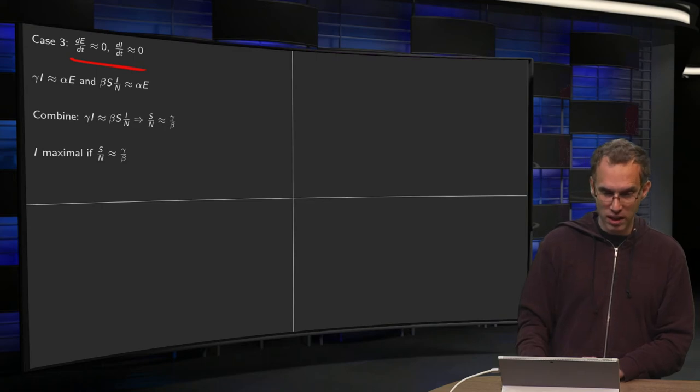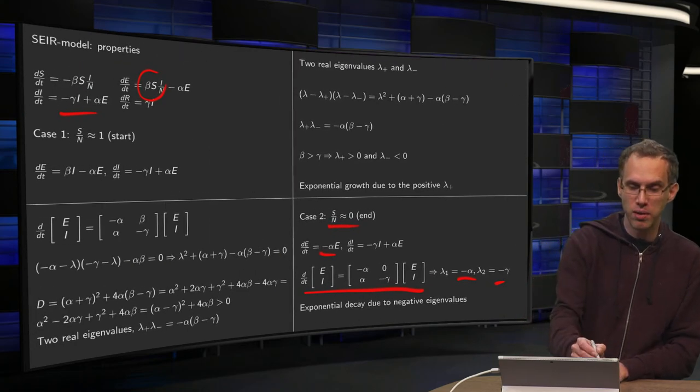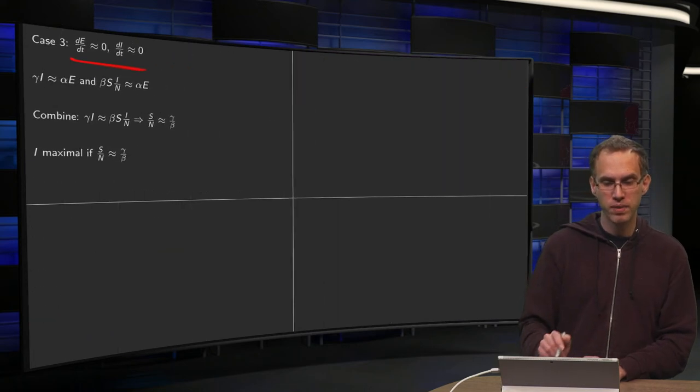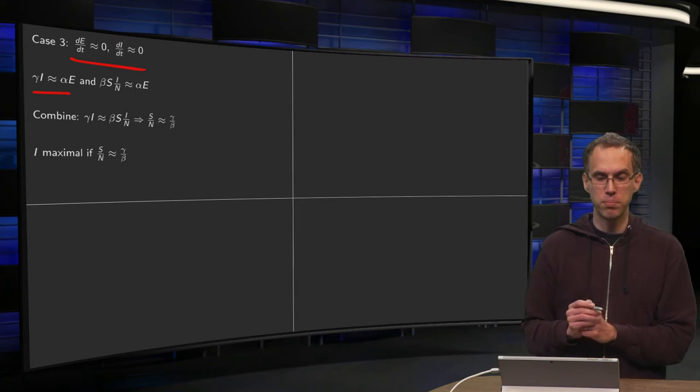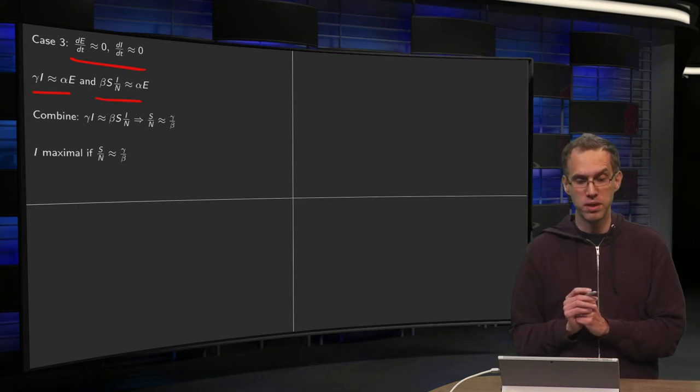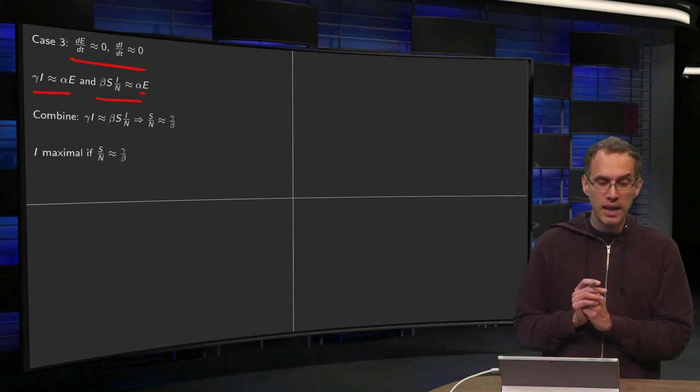Well, if that's the case, let's go back to our system. If the IDT is zero, you have this term has to be zero over here. So you have gamma I is approximately alpha E. And for the other one, you get beta times S times I of N is approximately alpha times the number of exposed.